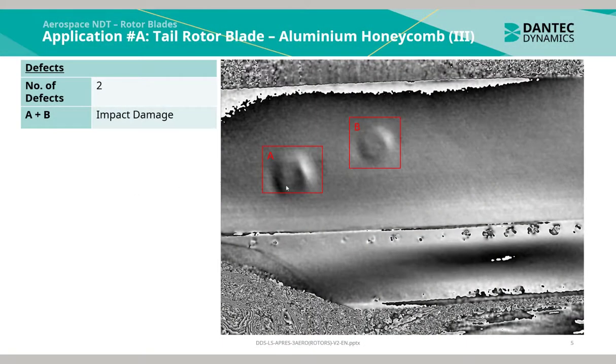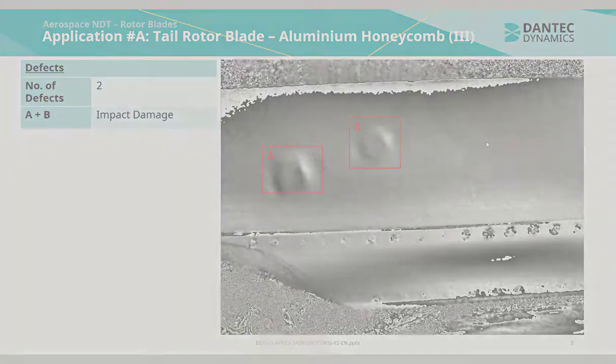There are two indications here of impact damage. What is also clear through the phasemap image is that the individual cell cores are also identifiable.